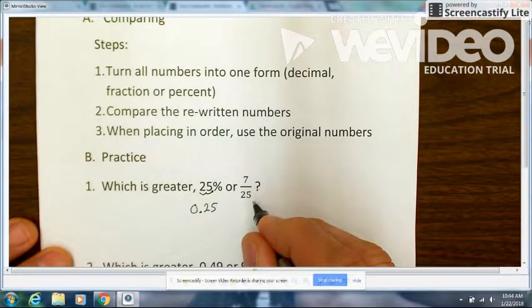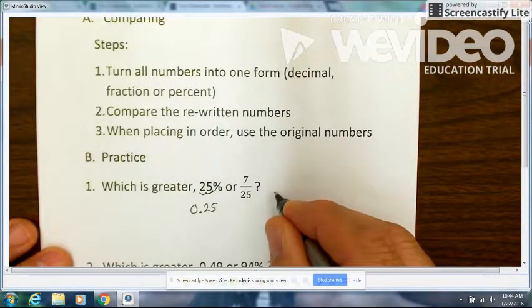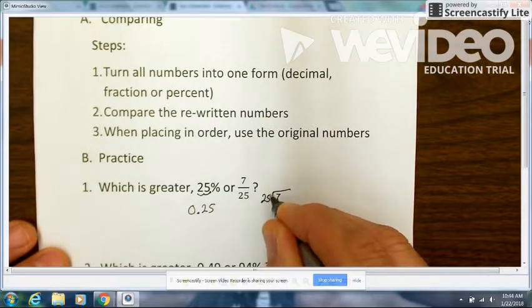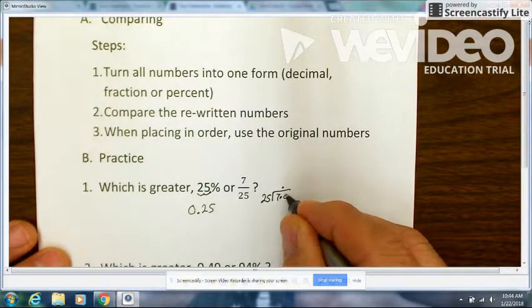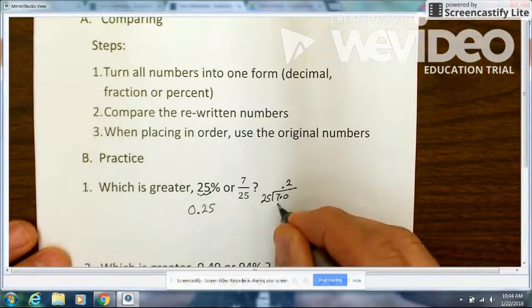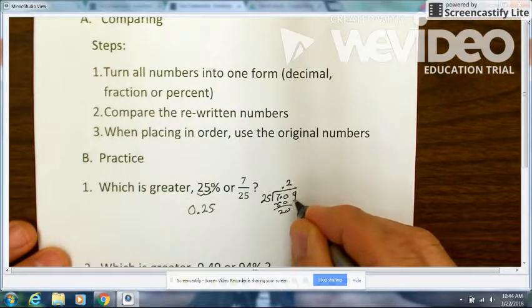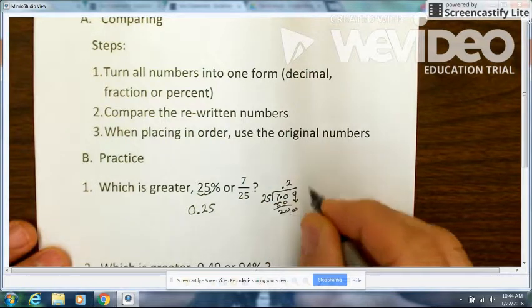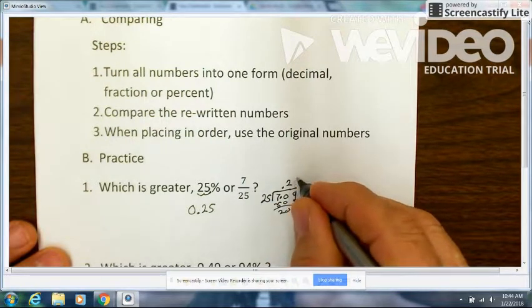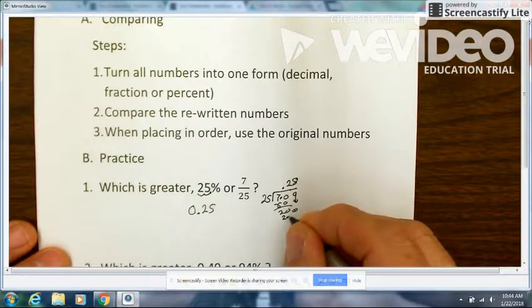You would take 7 and divide it by 25. So you add your decimal; that would go in there twice, which gives me 50. I get a remainder of 20, add a zero. 25 can go into 200 eight times, and that comes out evenly. So the decimal form of 7 over 25 is 0.28.